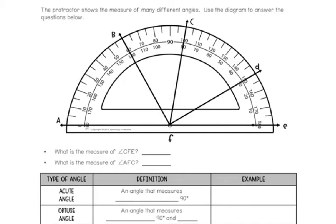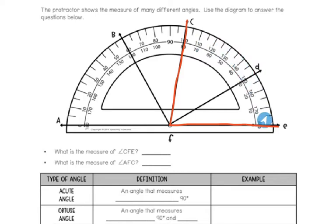Our first question is asking, what is the measure of angle CFE? That little symbol next to those letters is the angle symbol. I'm going to look on this protractor for the three letters C, F, E. That letter in the middle signifies the vertex of the angle — the vertex being the corner. So if I look in this diagram, here is C, there's F, and there's E. So we're talking about this angle right here. There are numbers on the top of this line and numbers on the bottom, and you need to know which side you're starting from.